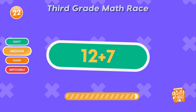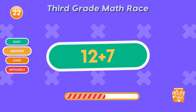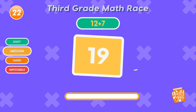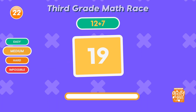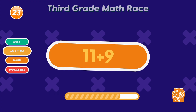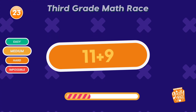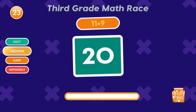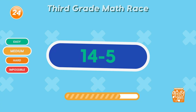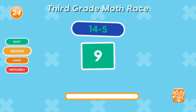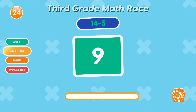What is 12 plus 7? 19! You're climbing the ladder! What is 11 plus 9? 20! That's two perfect tens! What is 14 minus 5? 9! Speedy subtraction!